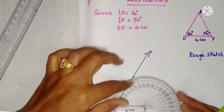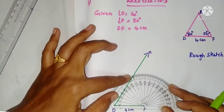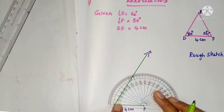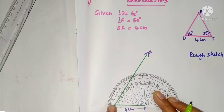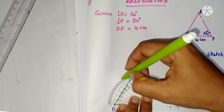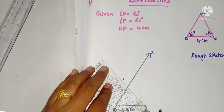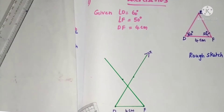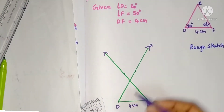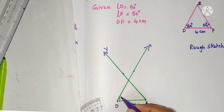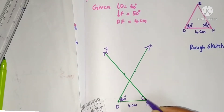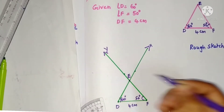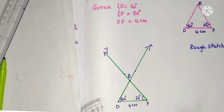Now for angle F, 50 degrees — place the protractor on F. Since 50 is less than 90, it is on the left side of 90. Using the above scale, mark 50 degrees here and draw another ray FY. This gives 60 degrees at D and 50 degrees at F. The intersection of these two rays is point E, so DEF is the required triangle.